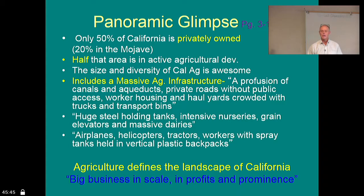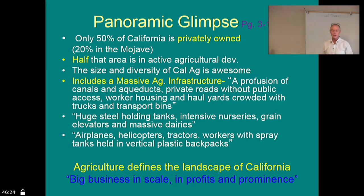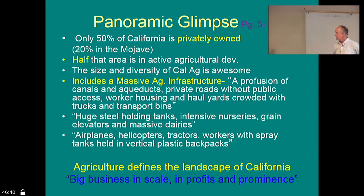For example, we'll look at managing cattle grazing on federal lands and how that's become more restricted over time. Is that really a good way to go, given that if we don't graze that land it becomes more susceptible to fire — there's more stuff out there to burn? The size and diversity of California agriculture is massive: canals, aqueducts, worker housing, haul yards, big industrial-scale operations. We're going to visit a dairy that milks about 1,200 cows. Last time in the San Joaquin Valley, I watched a helicopter flying over doing crop spraying.